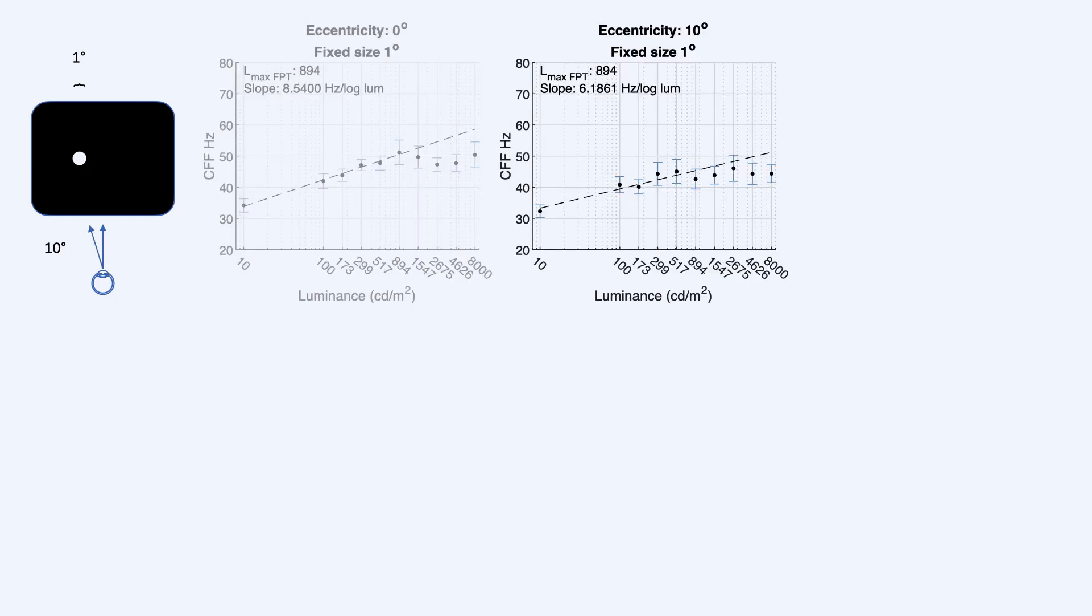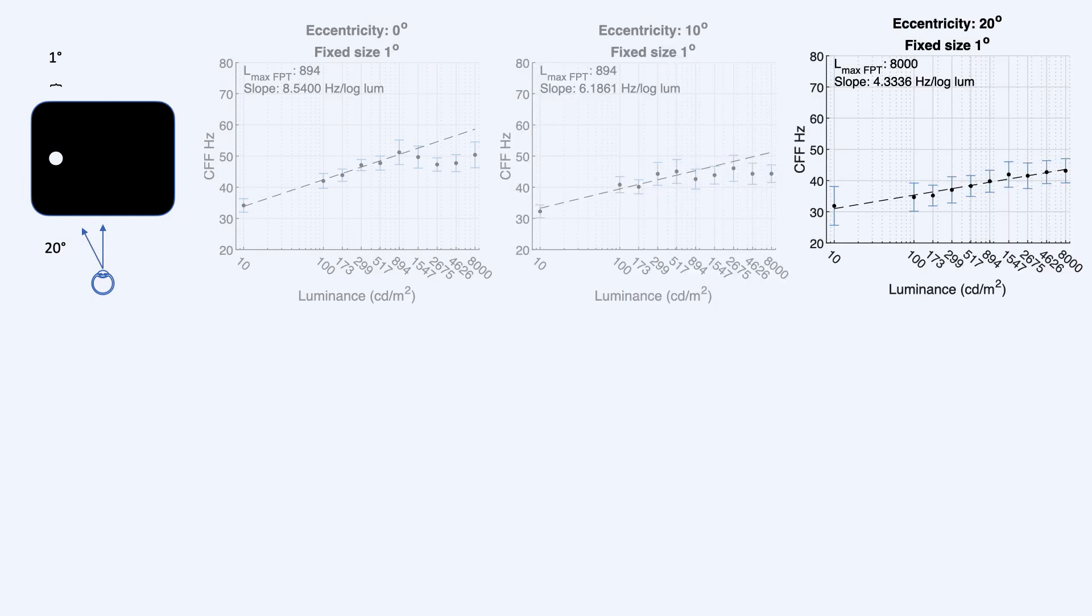Here's a result for a one degree stimulus at an eccentricity of 10 degrees. You can see a similar picture as before, but at a lower sensitivity overall. And finally, a similar result for 20 degrees with lower sensitivity again. In this case, it does seem to follow the Ferry-Porter law, but because of the error in the measurement and the very horizontal slope of the line, it's perfectly possible that it does level off in a similar way as the other conditions.